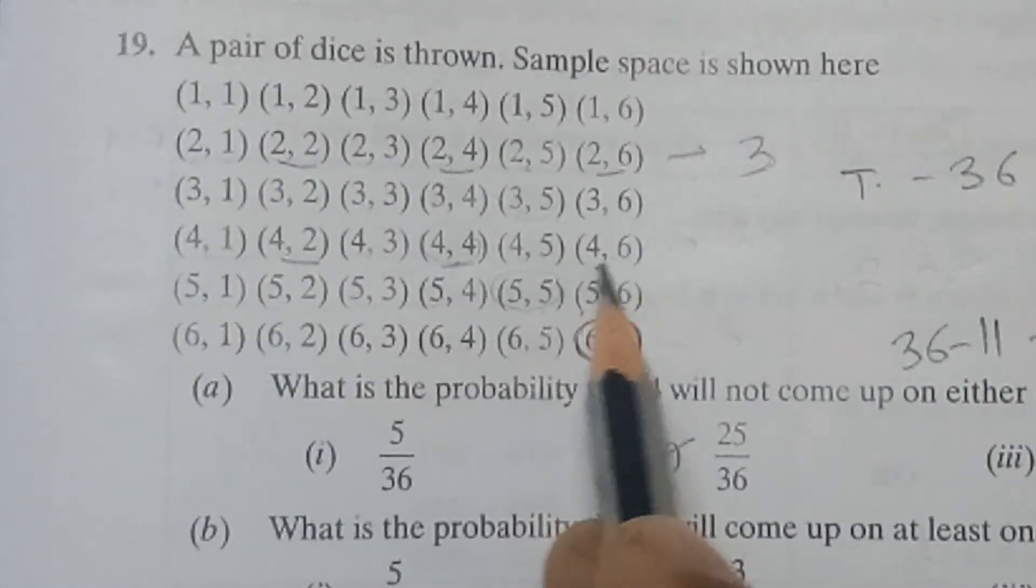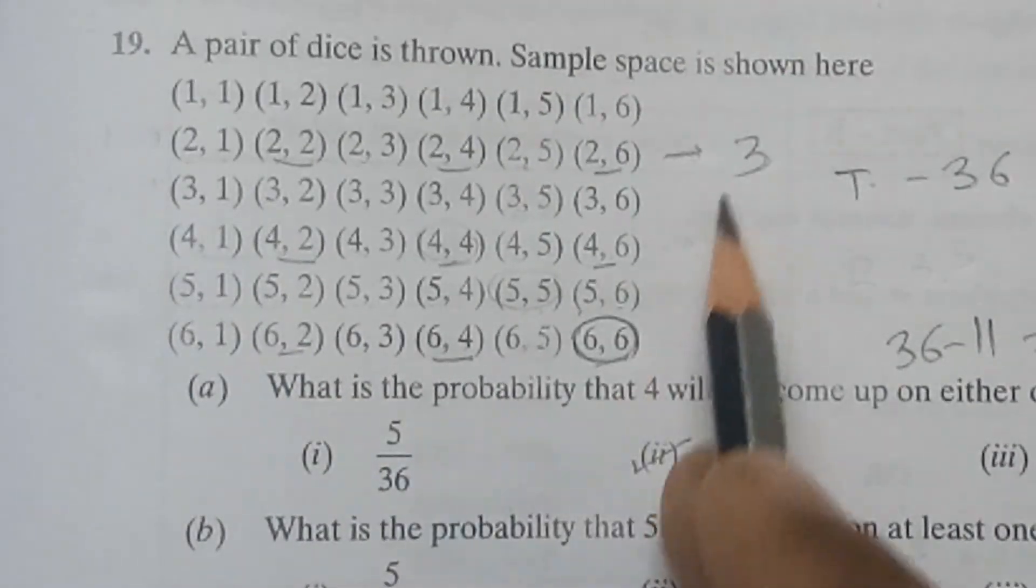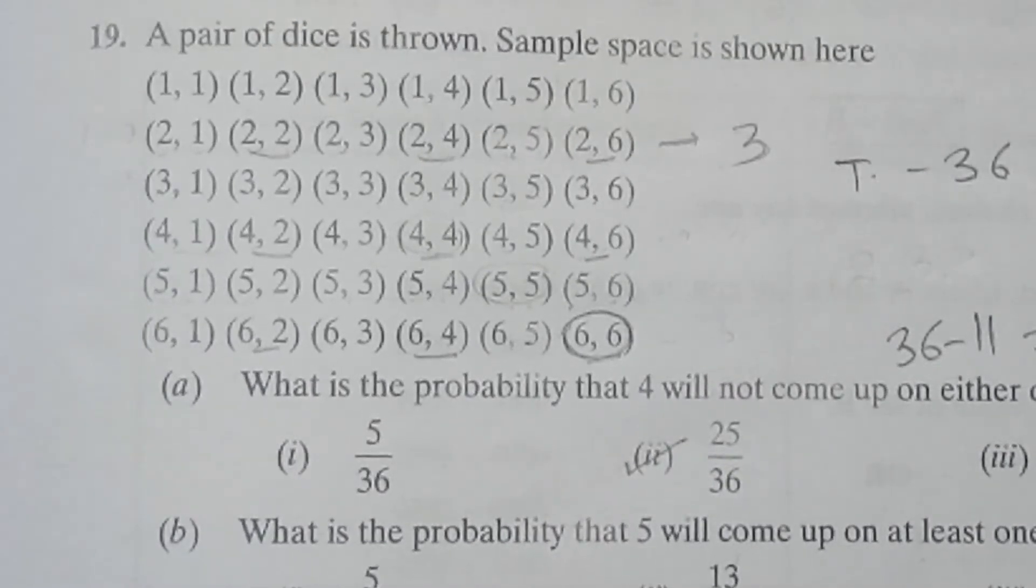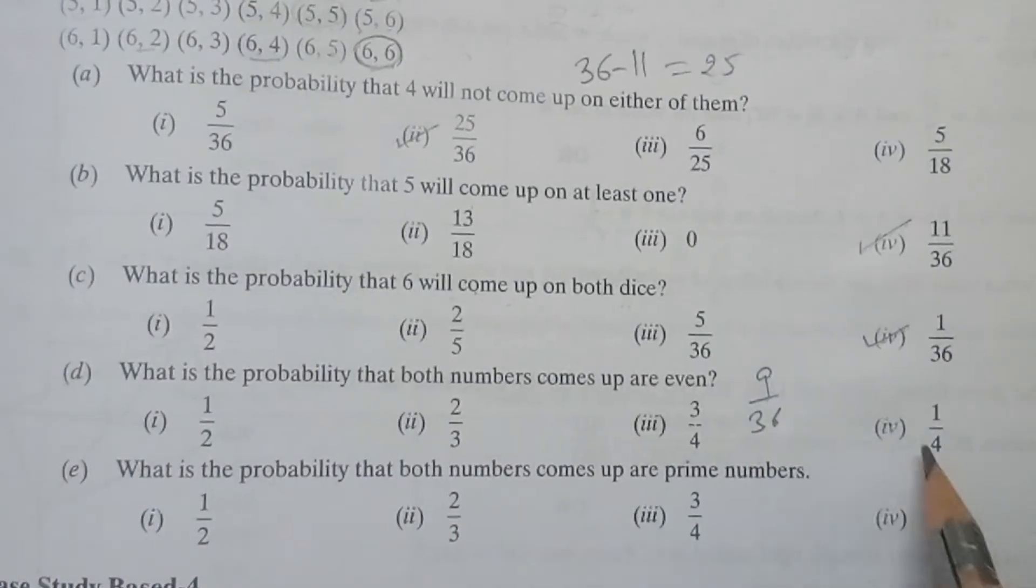Then (4,2), (4,4), (4,6) - 3 here. And (6,2), (6,4), (6,6) - so total 9. 9 times the even numbers are coming on both the dice. So probability will be 9 over 36 which equals 1 by 4.